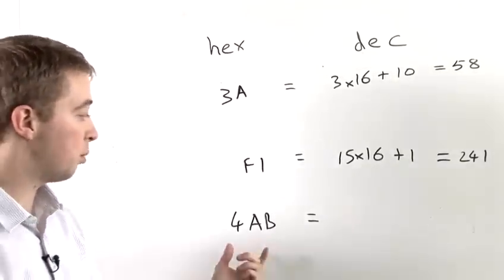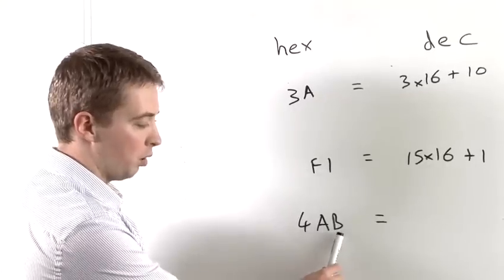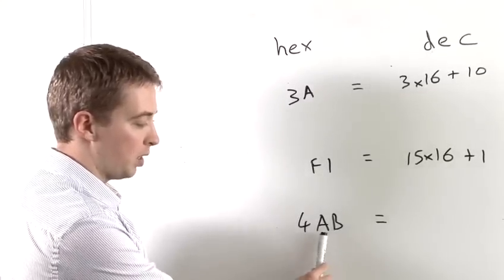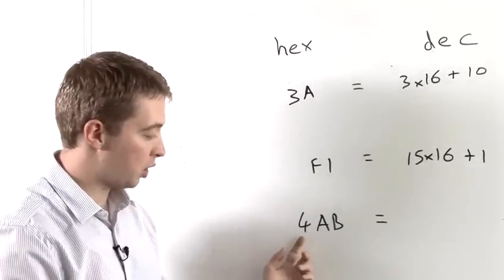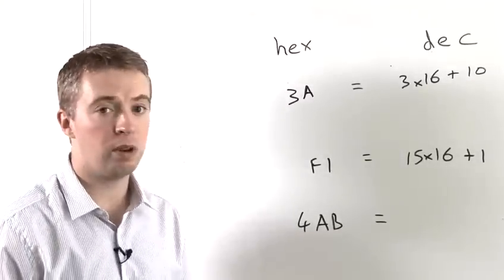Okay, so now our third example is a bit more complicated still. We still have digits in the units column and the 16s column. But now we also have a digit in the 16 squared column. Now 16 squared is 256.